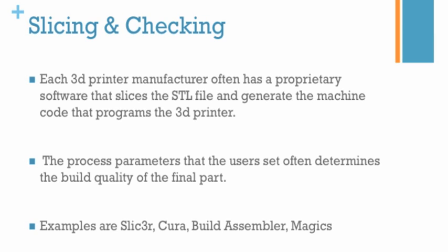The next step is slicing. Each 3D printer manufacturer often has their own unique software that slices the STL file and generates a machine code that programs the printer. A key process parameter users must determine is the layer thickness. The thicker the layer, the poorer the quality; the thinner, the better. It's also important to select a layer thickness thin enough so that minimum features are preserved and not lost.